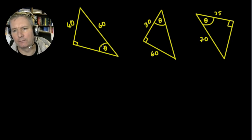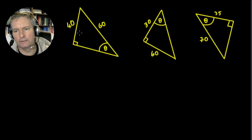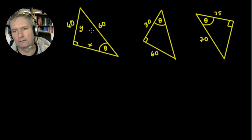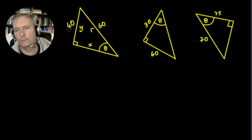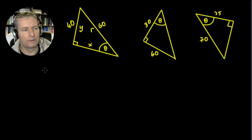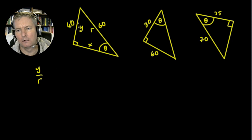From the angle theta, the side here is going to be the opposite, so we could call that y. Therefore we could call this the adjacent, so this would be x, and this length here would be our value of r. We know from our trigonometric identities that y upon r is going to equal the sine of the angle theta.